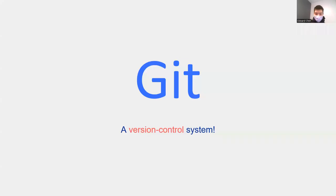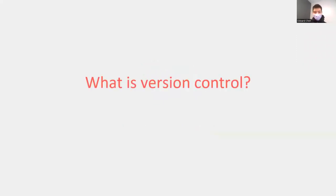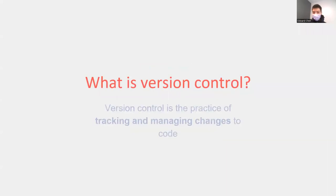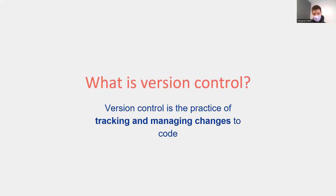So what is Git? Git is a version control system. What does that mean? It basically means that we want to keep track of the changes that we're making to a set of code over time, and version control is the practice of doing that.